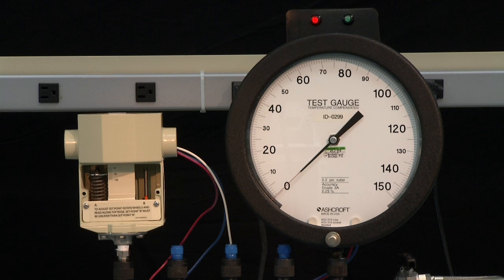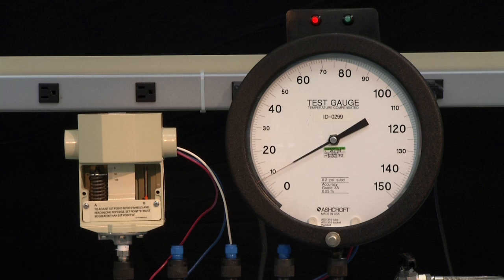The first step of calibration is to exercise the switch to make sure it is operating correctly. To exercise a switch, start from zero PSI and increase to full range of the switch, in this case 100 PSI, and then return back to zero.